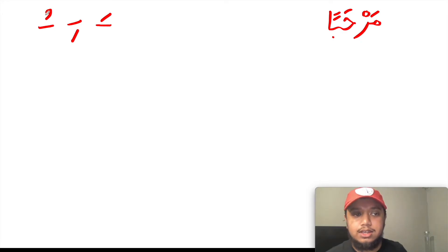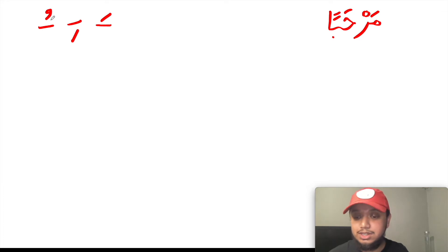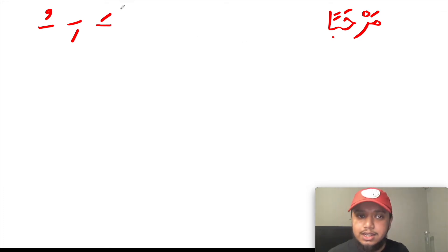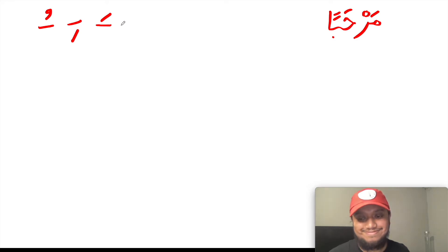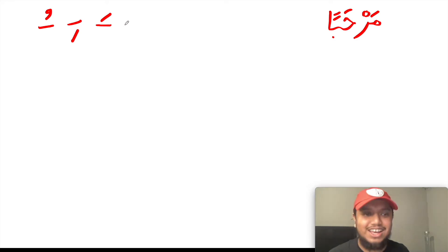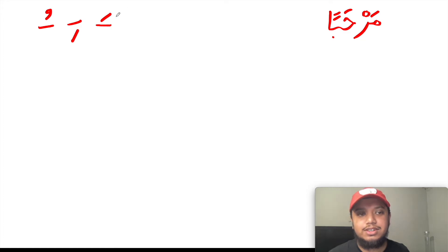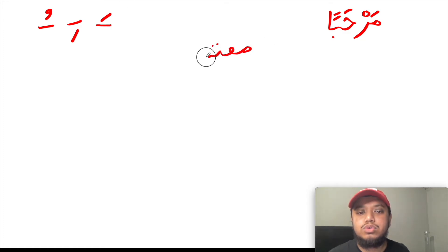The dhamma is known as pesh in South Asian languages. A letter that has a fatha on it is known as maftuha.